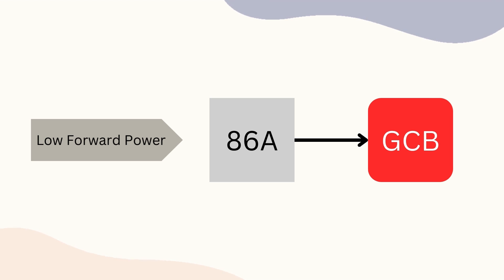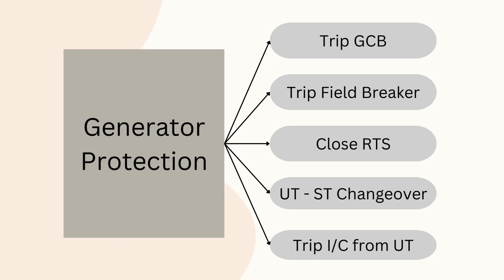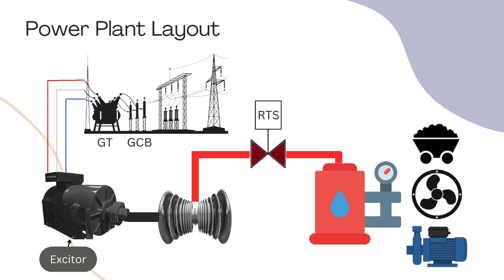These are the basics of Class A, B, and C protection. Now let's delve deeper to understand how these protections work. When these protections operate, the command goes to the GCB, field breaker, RTS, UT/ST changeover, and UT incomer. Understanding this power plant layout is necessary to grasp the effects of different protections.